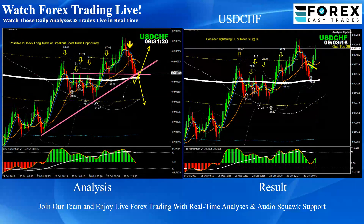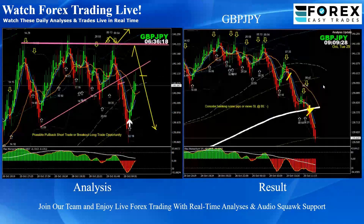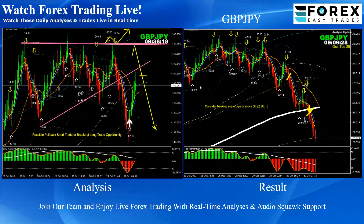Dollar Swiss Franc — pretty straightforward pullback long trade. Pound Yen — as you can see, based on the analysis, we mentioned that the price broke and after the breakout we were expecting a pullback. If the price breaks this resistance, then we should be looking along. We had a first pullback which we announced, then a second.